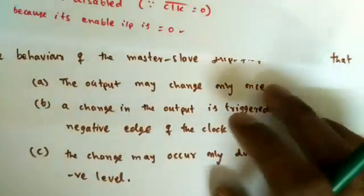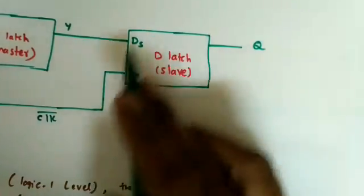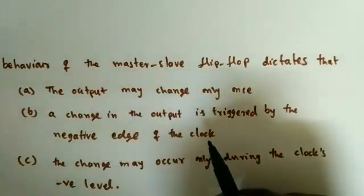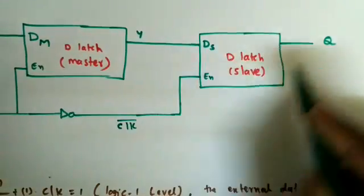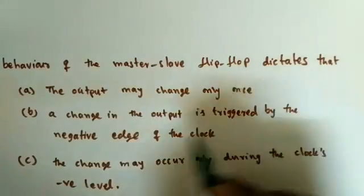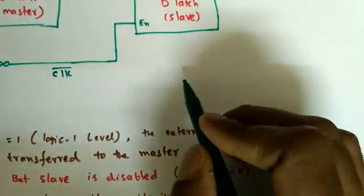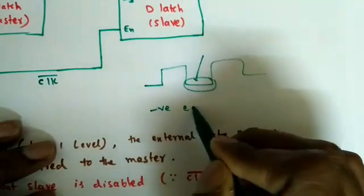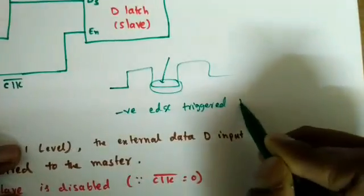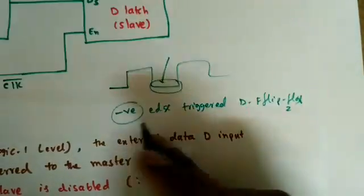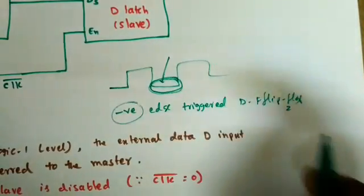The whole operation can be described in three points. First, the output Q changes only once — whenever the clock becomes zero, because the slave works only when clock equals zero. Second, the change in output is triggered by the negative edge of the clock — only when the clock transitions from 1 to 0 do we get the output. Third, the change may occur only during the clock's negative level. That's why this is called a negative edge-triggered D flip-flop.